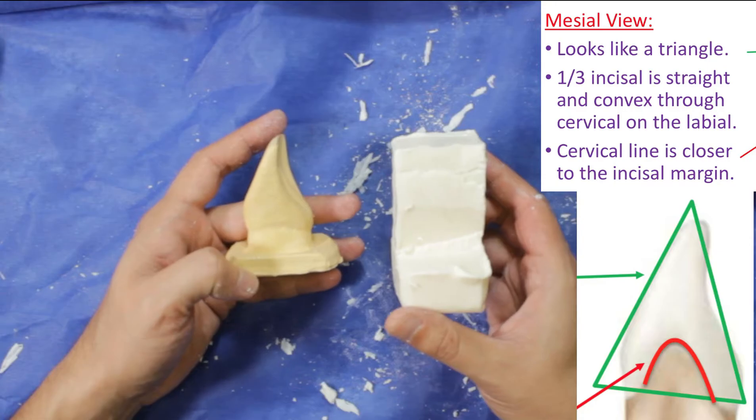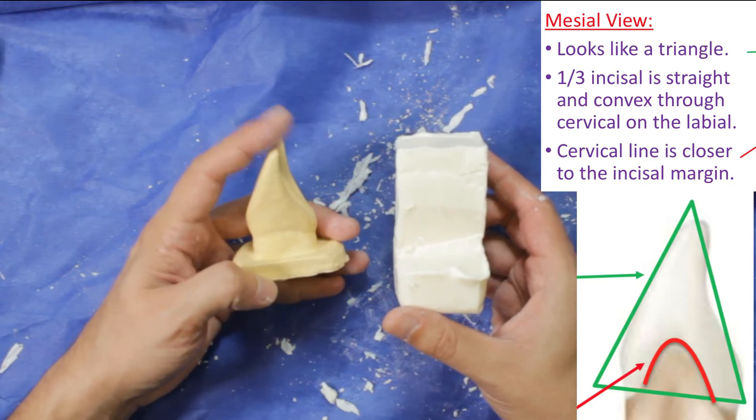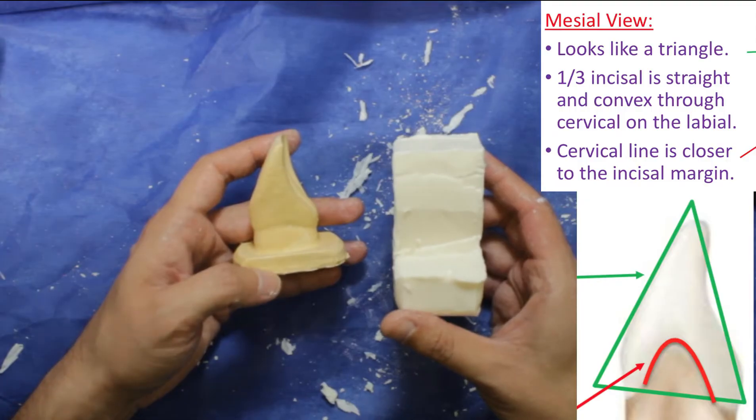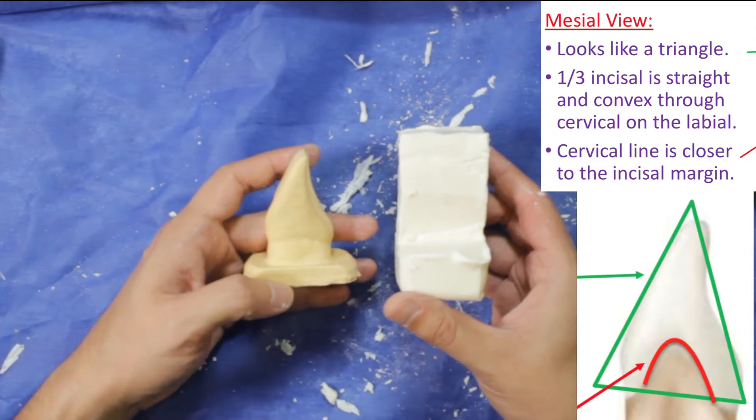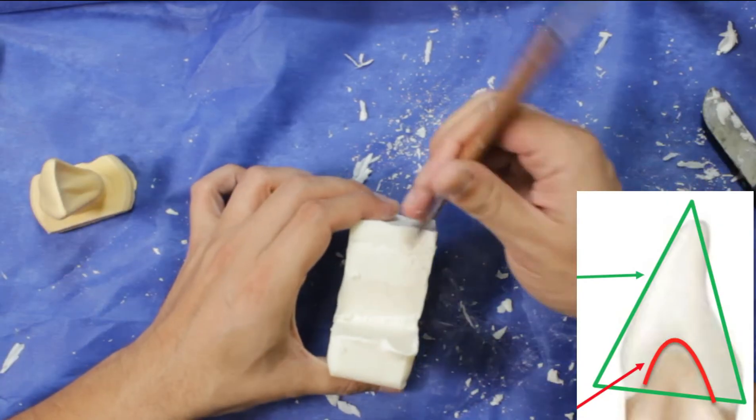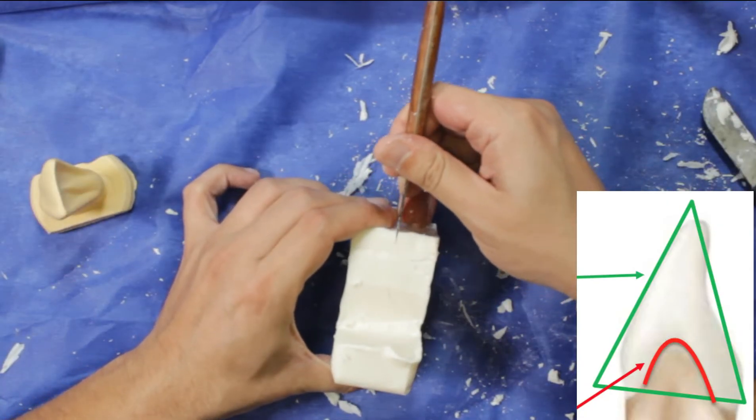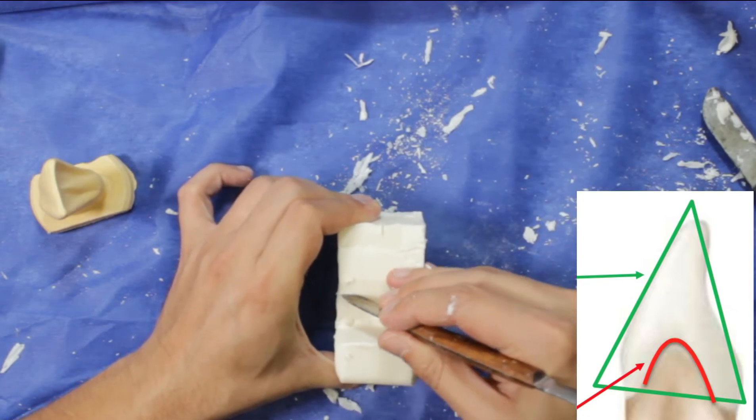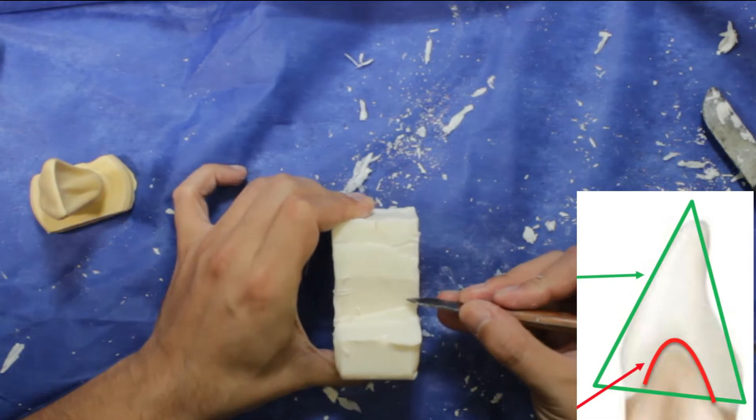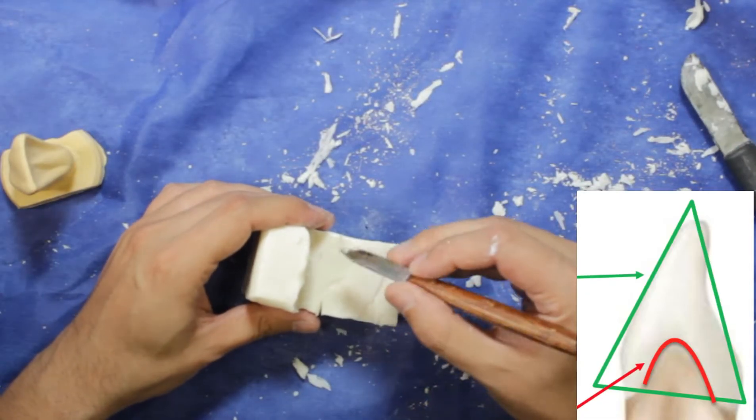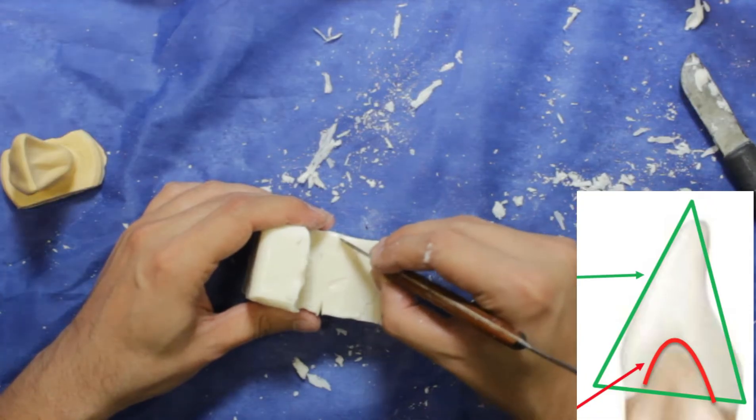From mesial aspect, it looks like a triangle. One-third incisal is straight and convex through cervical on the labial, and the cervical line is closer to the incisal margin. And we will mark the corners of the triangle. After drawing the inclinations of the tooth, you will cut it with a plaster knife.